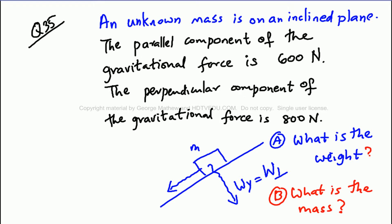Question number 35: An unknown mass is on an inclined plane. The parallel component of the gravitational force is 600 newtons. The perpendicular component of the gravitational force is 800 newtons. Part A: What is the weight? Part B: What is the mass?